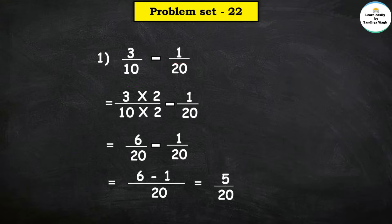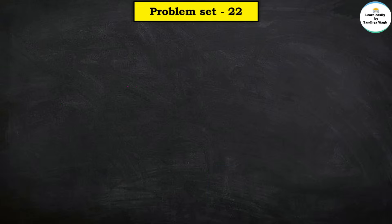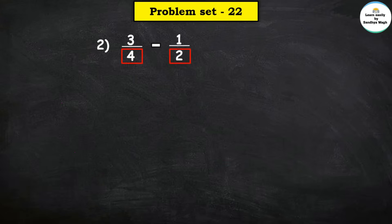Denominators are equal. Common denominator is 20. Numerator subtraction: 6 minus 1 = 5, denominator 20. So here our final answer is 5 upon 20. Next: 3 upon 4 minus 1 upon 2. Observe denominators — first fraction has denominator 4, second fraction has denominator 2. These are unlike fractions, we need to convert them.